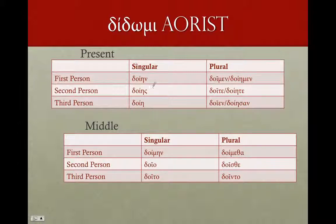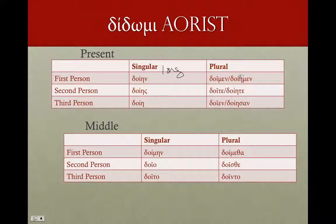In the aorist of δίδωμι, same rule. Long in the singular: δοίην, δοίης, δοίη. Remember, the aorist has only the simple stem. And in the plural, short: δοῖμεν, δοῖτε, δοῖεν. Or the long versions: δοίημεν, δοίητε, δοίησαν. In the middle: δοίμην, δοῖο, δοῖτο, δοίμεθα, δοῖσθε, δοῖντο. Perfectly regular — stem, iota, ending.